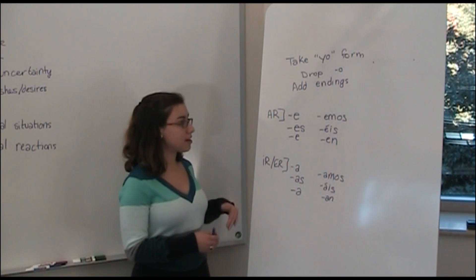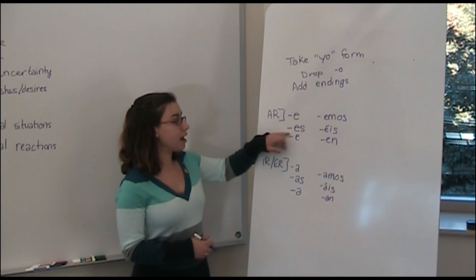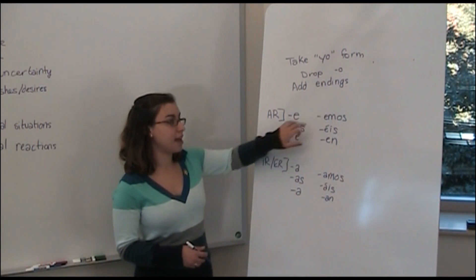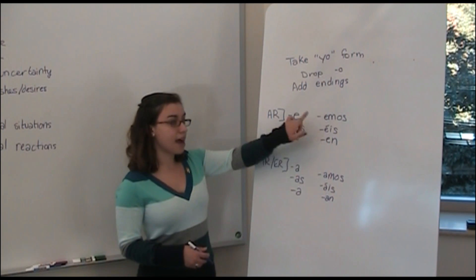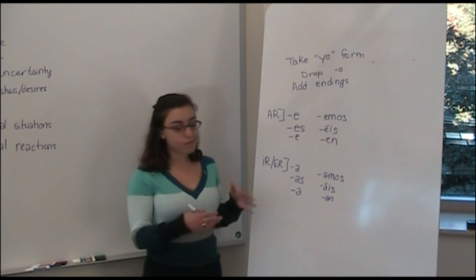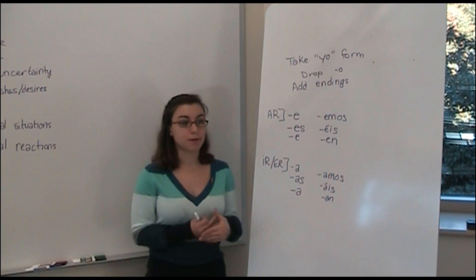If we looked at the present tense, it would be for -ar verbs -o, -as, -a, -amos, -áis, and then -an. And then the same for the -ir, -er would be the opposite ones.